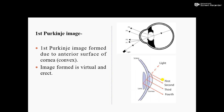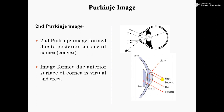The Second Purkinje Image is formed due to the posterior surface of the cornea. This is the cornea — this is the anterior surface and this is the posterior surface. The posterior surface of the cornea is also convex, so the image formed due to the posterior surface of the cornea is virtual and erect.